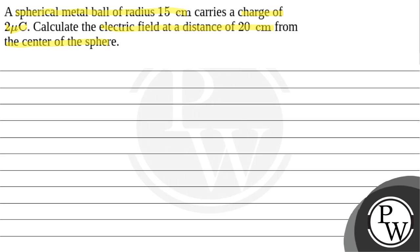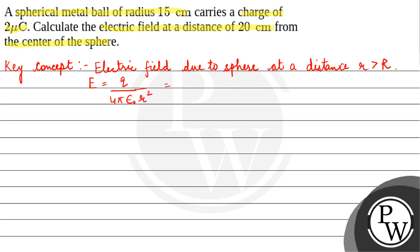So here our key concept is electric field due to a sphere at a distance greater than the radius. That is given by E equals Q upon 4πε₀r². And 1 upon 4πε₀ is k, so it would be kQ upon r².